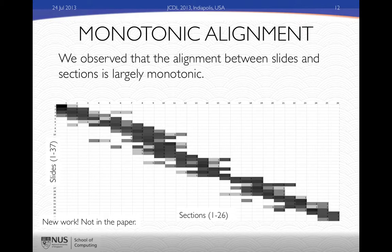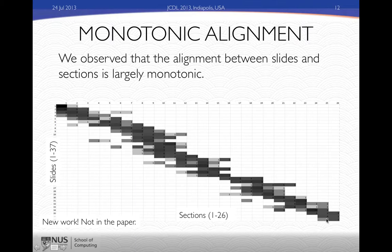Monotonic alignment suggests that slides and sections of a paper are usually linearly aligned — they proceed monotonically increasing. If you start from the upper left of this slide, this is the first slide and the first section, and going towards the diagonal bottom is the last section and last slide. The black boxes here indicate with their intensity where slides are usually aligned. You can see they roughly follow this diagonal, suggesting the order of the presentation and the order of the slides are monotonic. This is compiled using the average number of sections and slides from the dataset, and these results were not in the original paper.